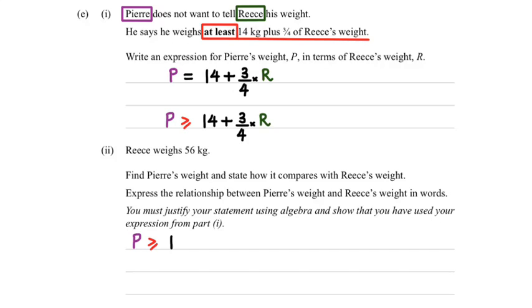So, we have our equation, which is 14 plus 3 quarters times R. And we also now know what Rhys is, because Rhys is 56 kgs, as it's shown in the green box. So we could write this as 56.